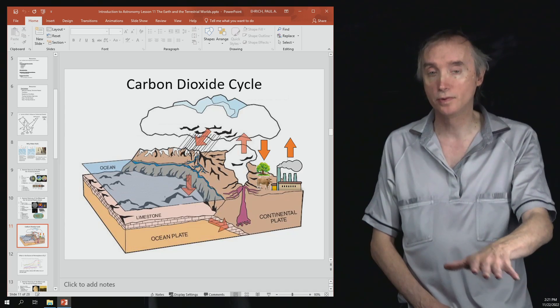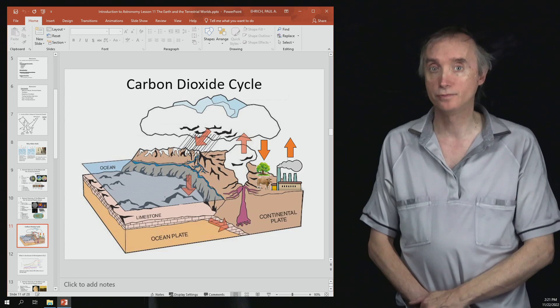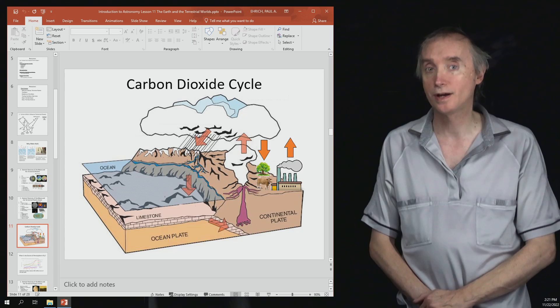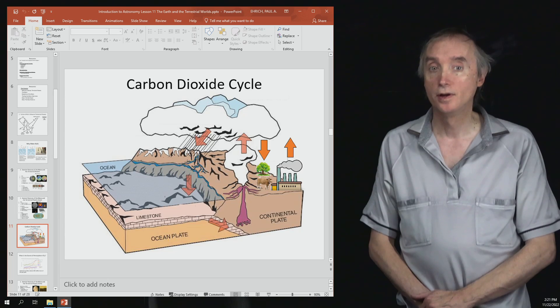It falls to the bottom of the ocean and makes layer after layer of limestone. Roughly 90% of all Earth's carbon dioxide is locked up in the form of limestone on the floor of the ocean.